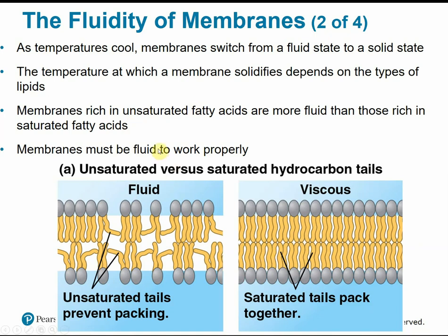Remember the difference between unsaturated and saturated fatty acids. If they're saturated, the tails are more linear and we can pack them in more tightly. So if you have more saturated phospholipids, you'll have a more rigid cell membrane because there's not as much wiggle room between those tails. Whereas unsaturated fatty acid tails have more kinks, which prevents that tight packing and makes the membrane more fluid and less viscous.